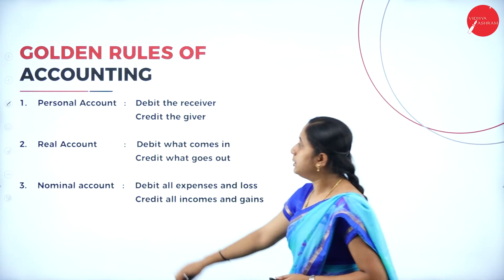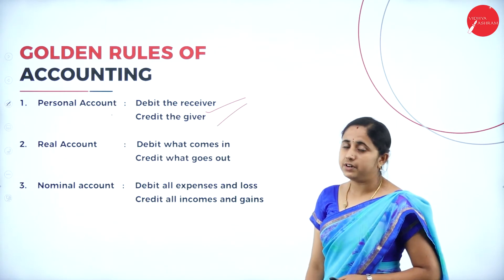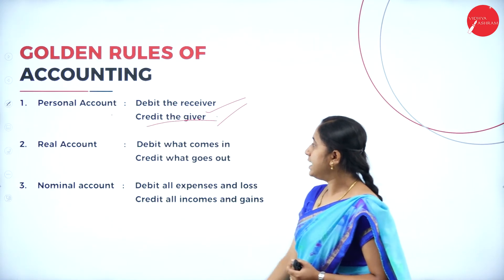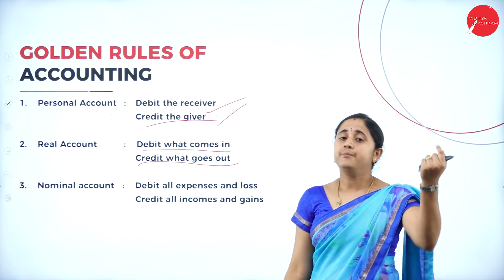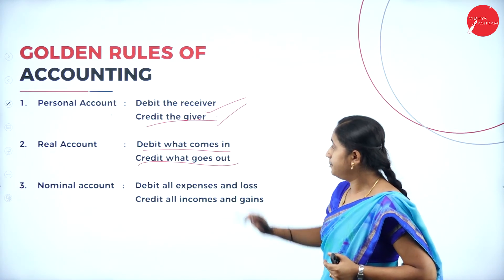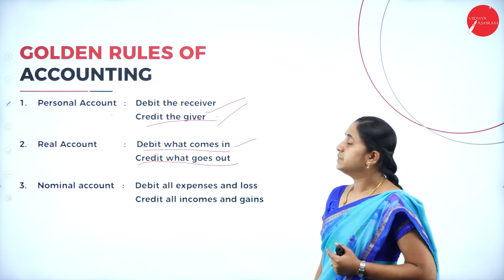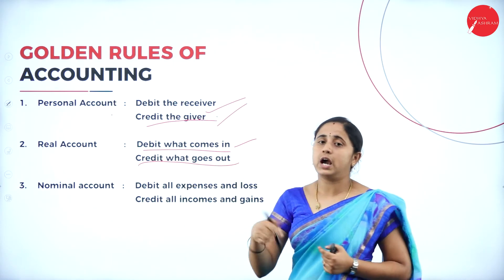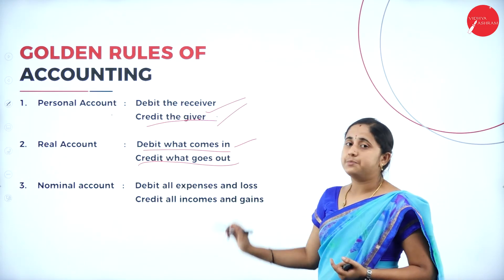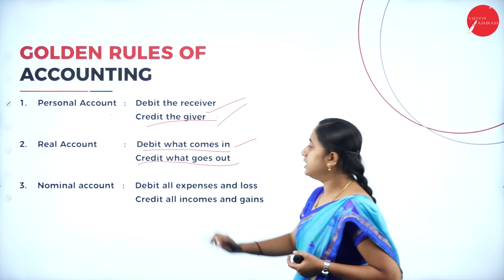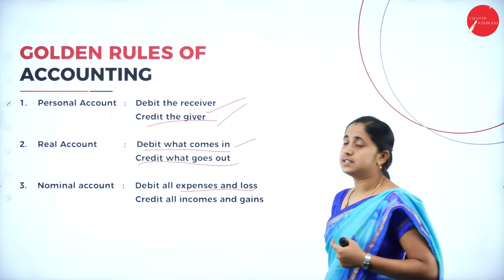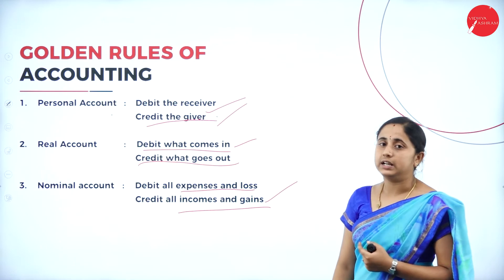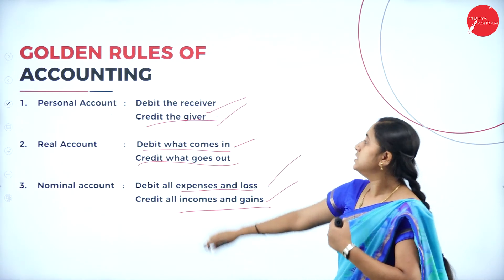So the golden rules of accounting: for personal account, the rule is debit the receiver and credit the giver. Who is receiving? You debit the receiver. Who is giving? You credit the giver. For real account: debit what comes in and credit what goes out. If an asset is coming in for the organization, you debit it; if the asset is going out from the business, you credit it. For nominal account: debit all the expenses and losses, credit all the incomes and gains. So this is the golden rules of accounting.